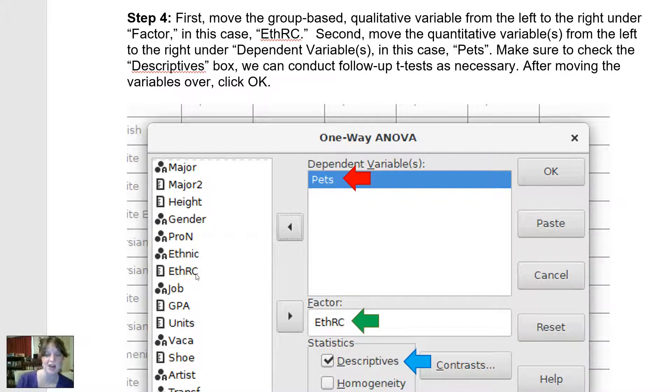So we ended up with six different ethnic groups. And then I recoded it to be one through six. And that gets put under here, under factor as ETHRC. So I used this little arrow here to take ETHRC and move it over here. And then what am I comparing? I decided to compare the different ethnic groups on the number of pets that they have. So I found pets on this list, and I moved it over here to the dependent variable field.